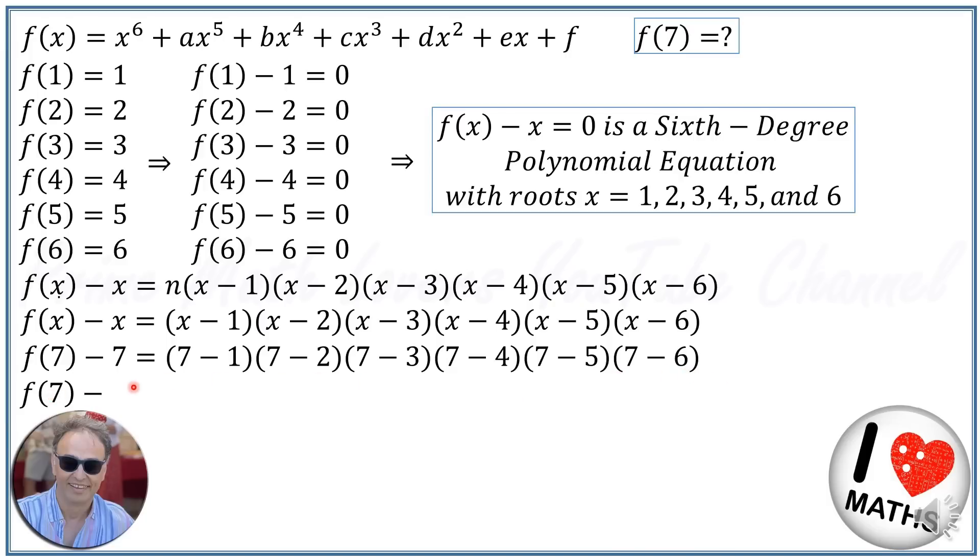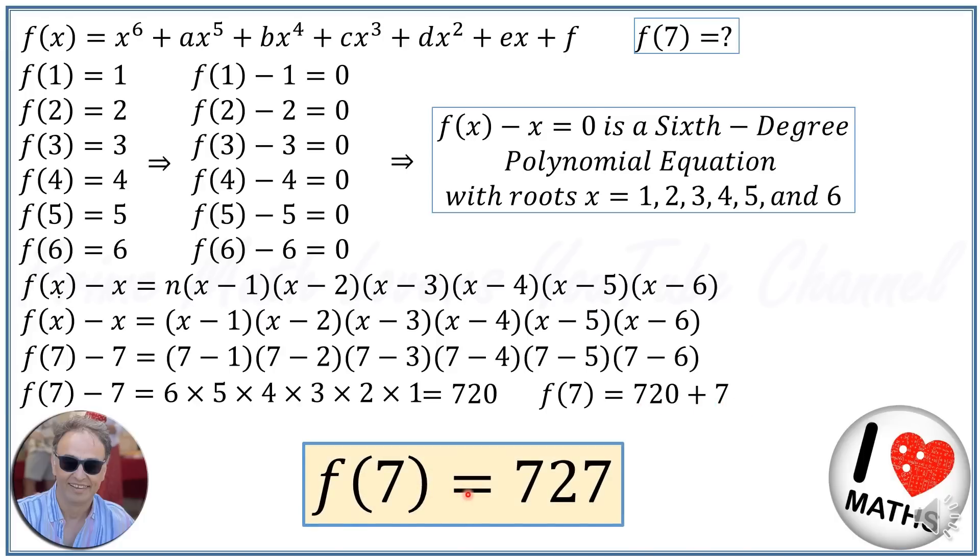f(7) - 7 = 6 × 5 × 4 × 3 × 2 × 1, and the right hand side of the equation will be 720. So f(7) - 7 = 720, or f(7) = 720 + 7, or f(7) = 727. As simple as that.